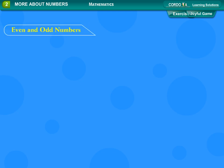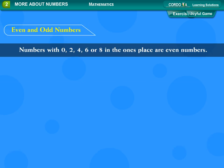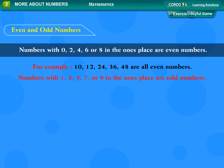Even and odd numbers. Numbers with 0, 2, 4, 6, or 8 in the ones place are even numbers. For example: 10, 12, 24, 36, 48 are all even numbers.